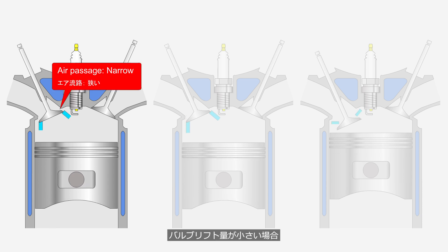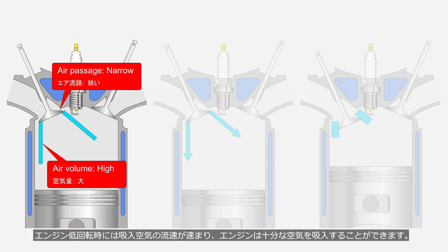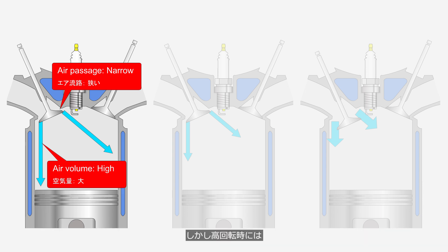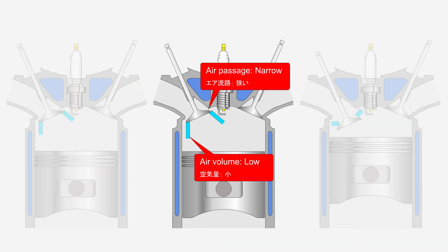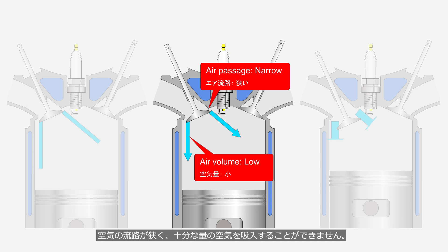When the valve lift is small, the intake air velocity is high at low engine speeds, allowing the engine to intake sufficient air. However, at high engine speeds, the narrow air passage cannot allow a sufficient amount of air to flow.